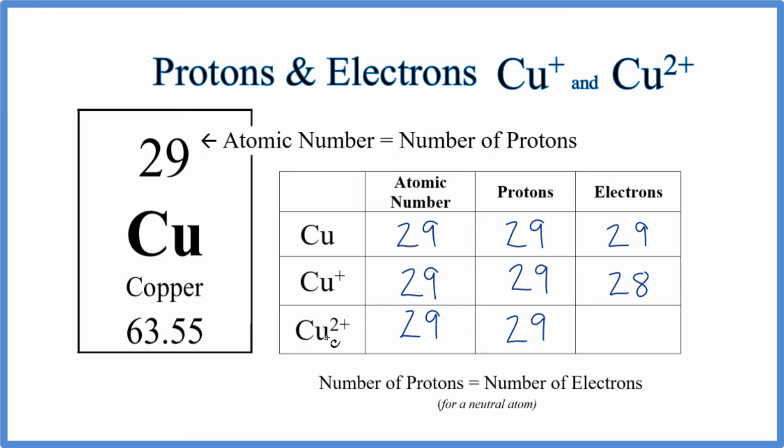For copper 2, the copper 2 ion, we've lost 2. So instead of 29, we have 27.